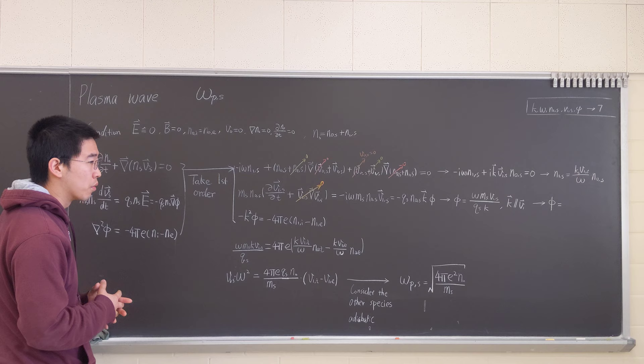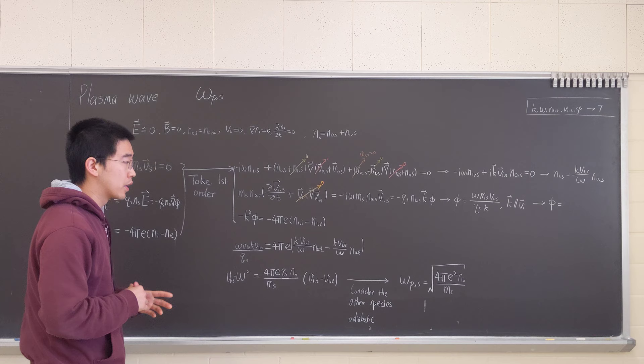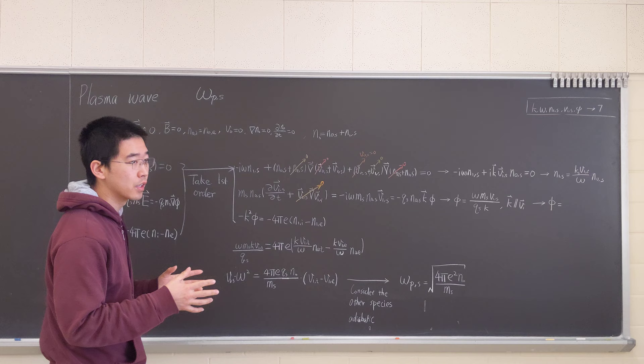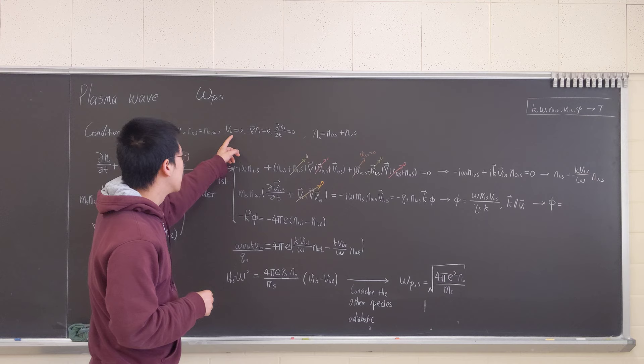So the initial condition that we're considering is there's no background electric field, there's no magnetic field, background ion electron density are the same. We consider the hydrogen-like plasma.